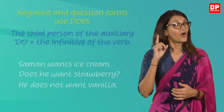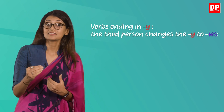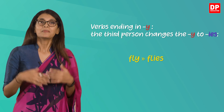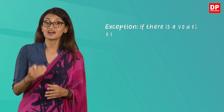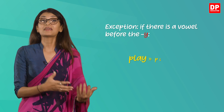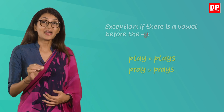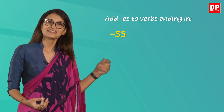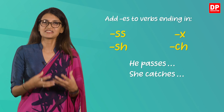Also remember that for verbs ending in Y, the third person changes the Y to I-E-S. So 'fly' becomes 'flies,' and 'cry' becomes 'cries.' There is an exception: if there is a vowel before the Y, 'play' becomes 'plays' and 'pray' becomes 'prays.' We can also add ES to verbs ending in double S, X, SH, and CH: he passes, she catches, he fixes, it pushes.